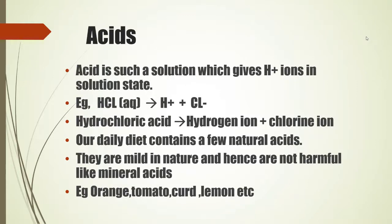An acid is a substance which gives H⁺ (hydrogen) ions in solution state. For example, HCl dissociates in water — when hydrochloric acid dissociates, the hydrogen ions get separated and the chlorine ion gets separated. That solution is said to be acidic because in acids we have H⁺ ions dissociated. Some examples of acids: hydrochloric acid (HCl), nitric acid (HNO₃), sulfuric acid (H₂SO₄), carbonic acid (H₂CO₃) found in cold aerated drinks. A dairy diet contains a few natural acids — mild in nature and hence not harmful like mineral acids.